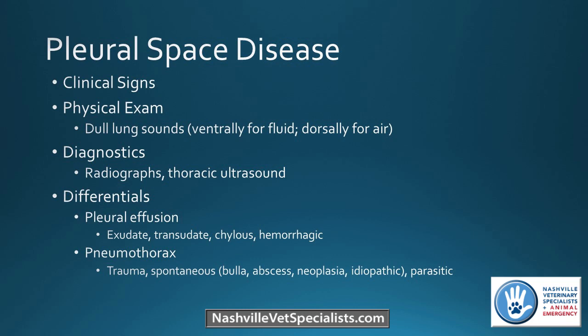Differentials for pleural effusion include exudates like pyothorax, transudates like heart failure, chylous effusion, and hemorrhagic effusion from trauma. For pneumothorax, it's most common after trauma, usually blunt force like being hit by a car. You can also have a spontaneous pneumothorax — we see that a lot in huskies. We've also seen cases from heartworm disease cause a spontaneous pneumothorax.